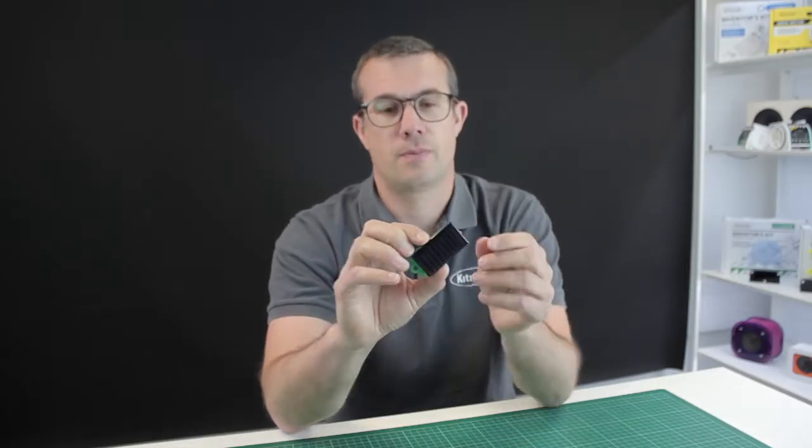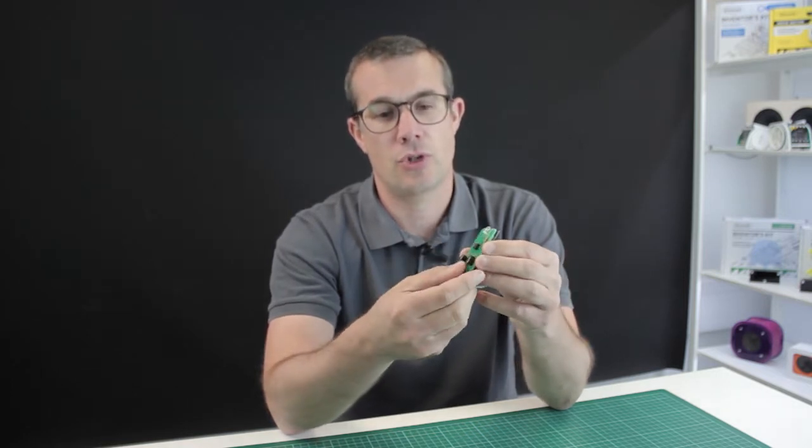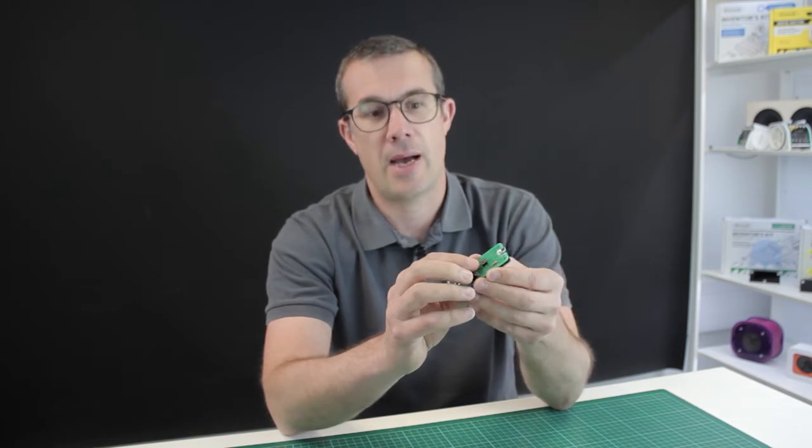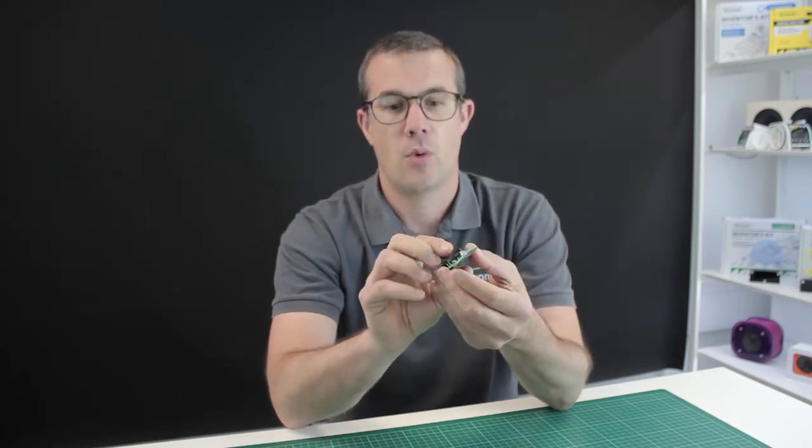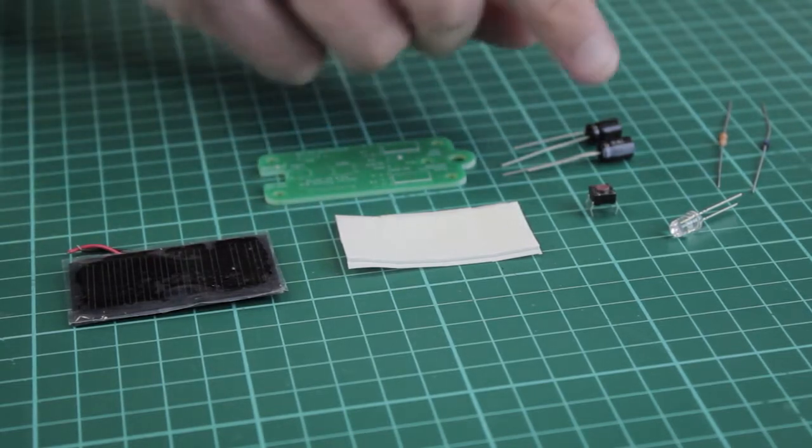This is our solar torch. It uses a small solar cell here to charge up two capacitors on the back of the board here. These can then power this LED when we press the button.